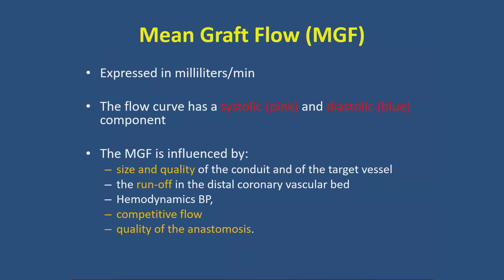First, let's look at the mean graft flow. It's expressed in milliliters per minute. The flow curve, when connected to the EKG, has a systolic and diastolic component. The mean graft flow is influenced by the size and quality of the conduit — it's crucial to adjust the size of the probe to the size of the graft. It is also impacted by the runoff, blood pressure (ideally mean blood pressure above 80 mmHg), competitive flow, and the quality of the anastomosis.